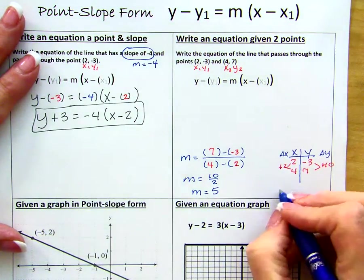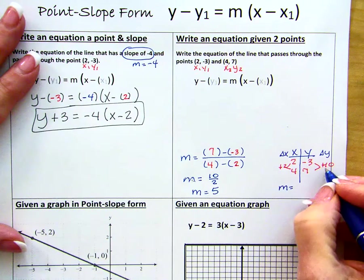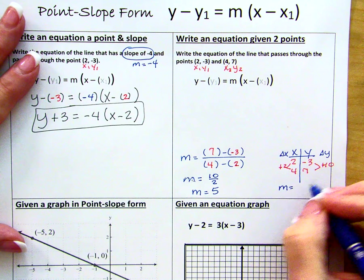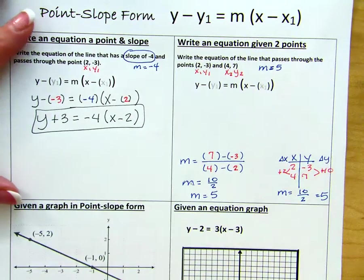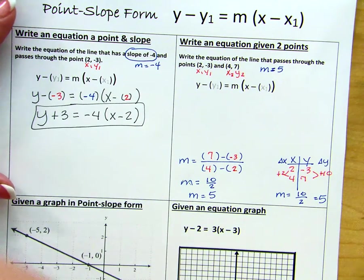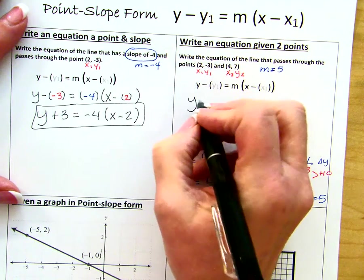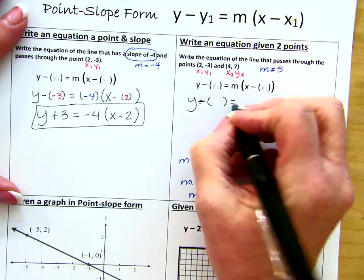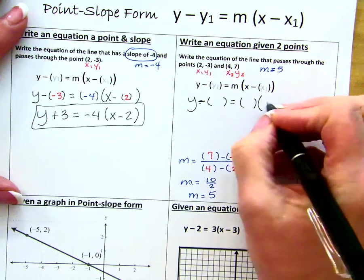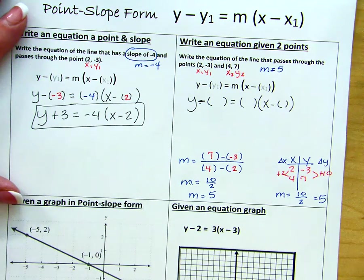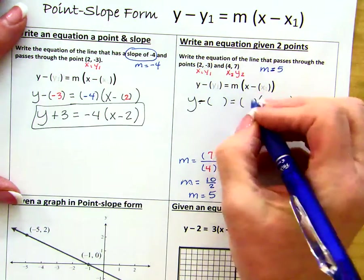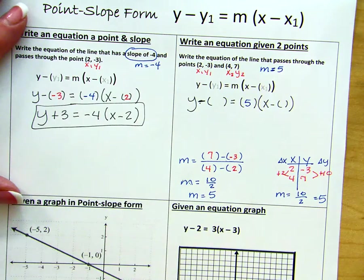On this side, again, we're going to get m is going to be the change in y over the change in x is going to be 5. So our skeleton for our point slope form looks like this. Yes, I know we have double parentheses there. So our m is 5. We can go ahead and put that in.